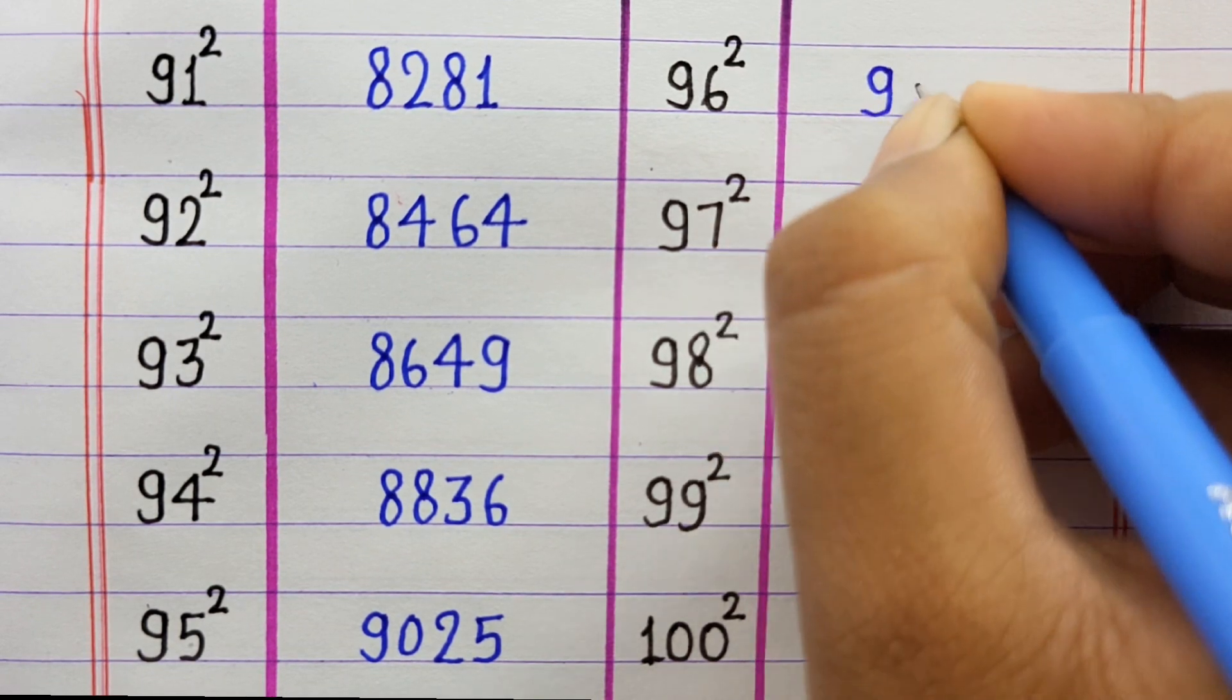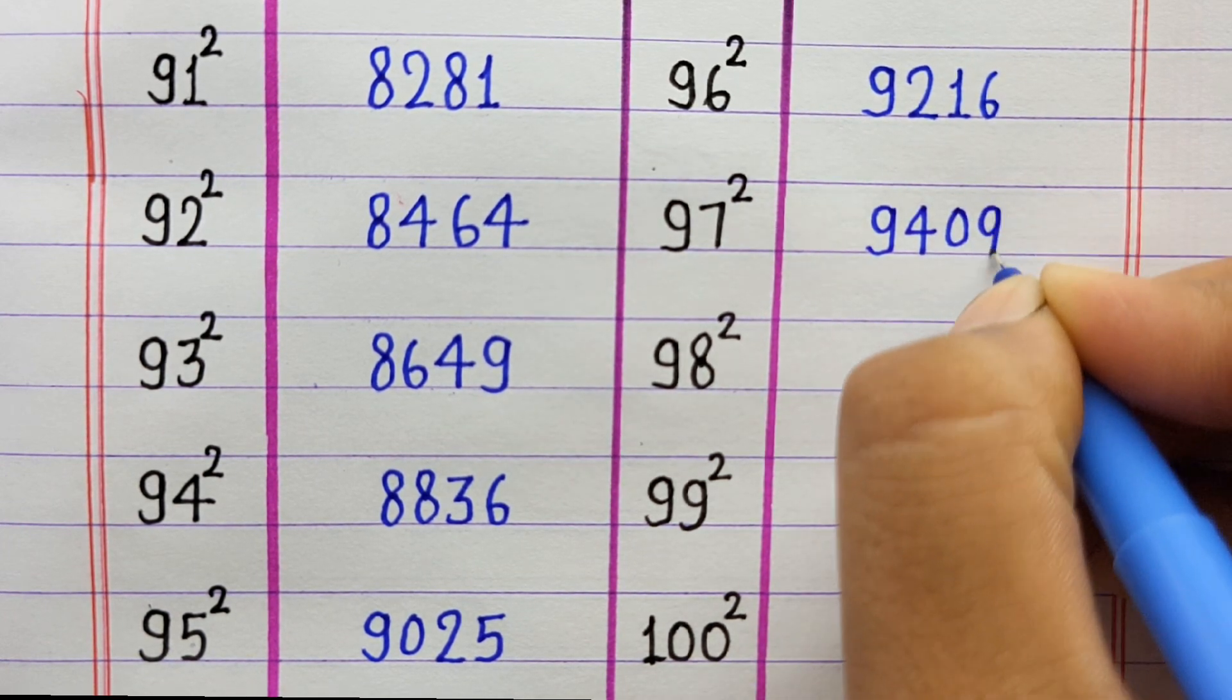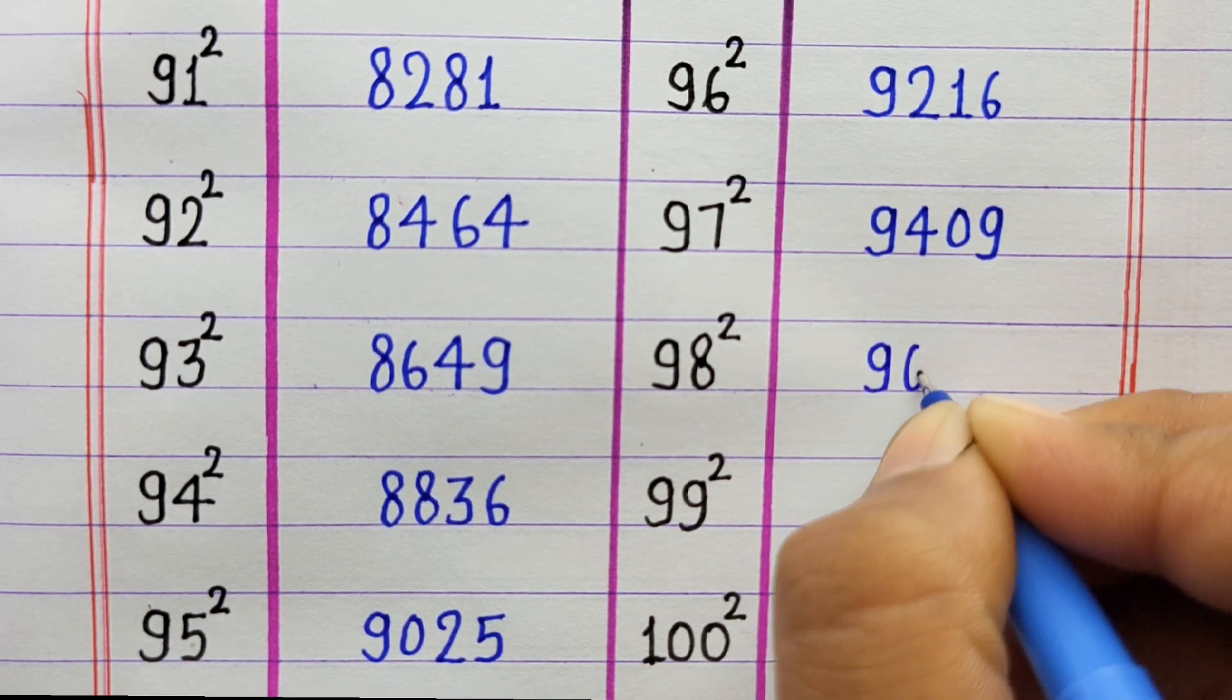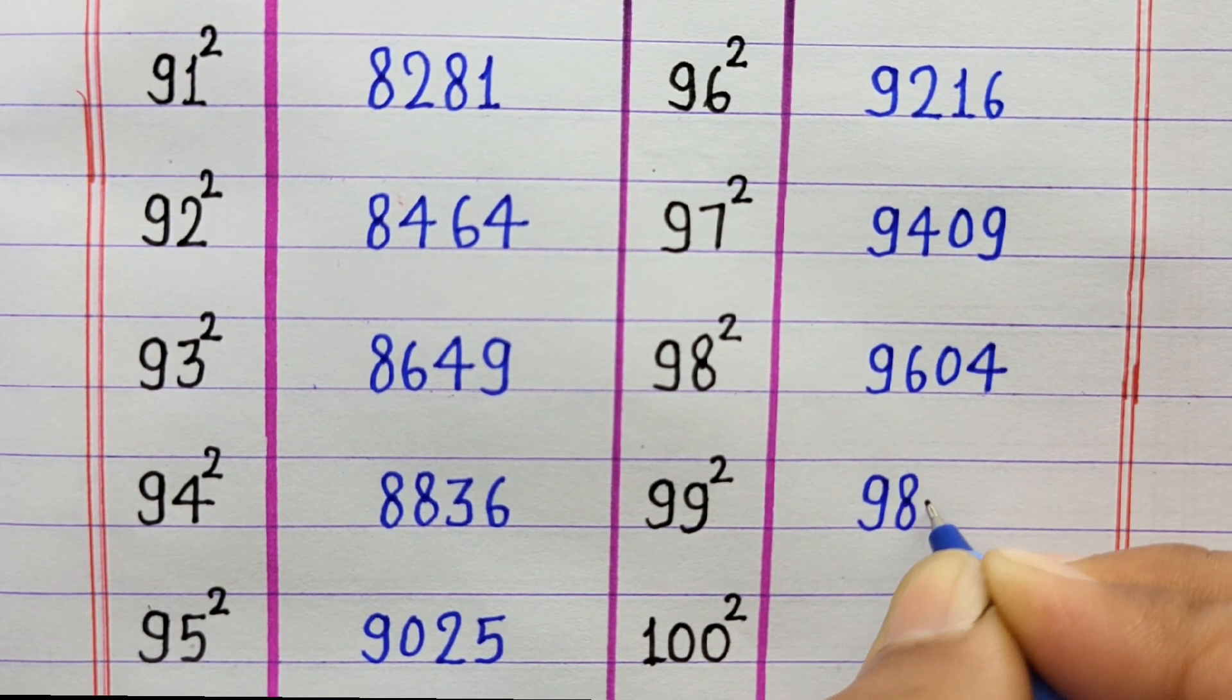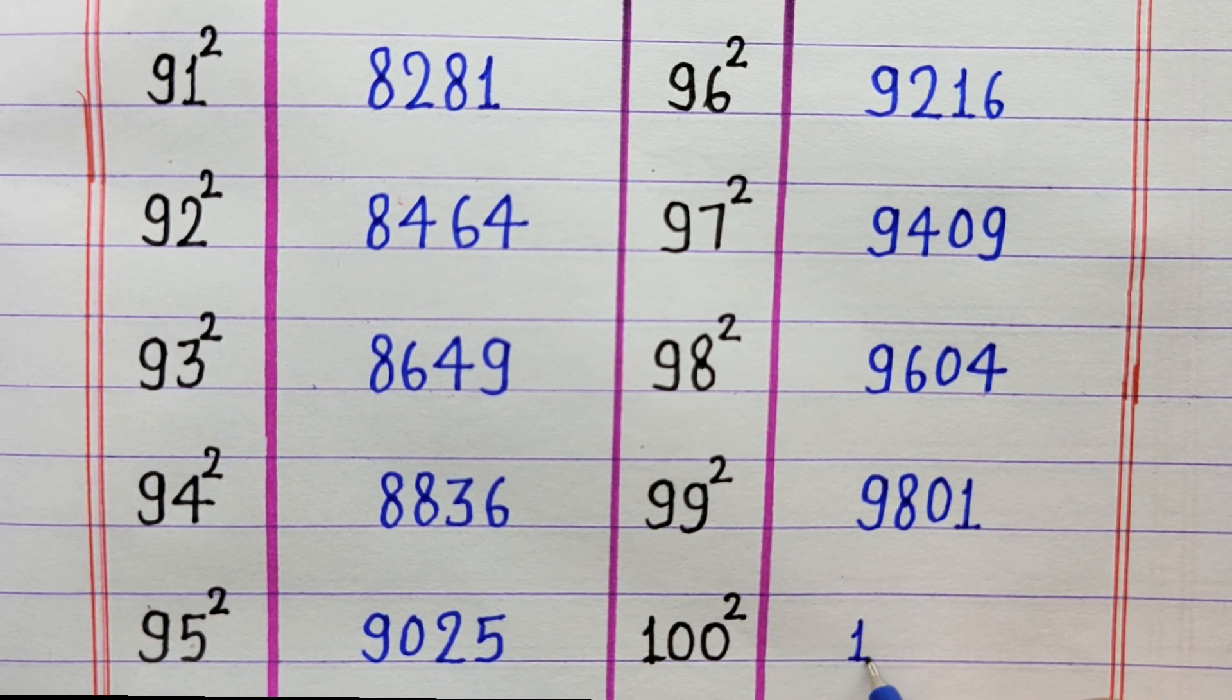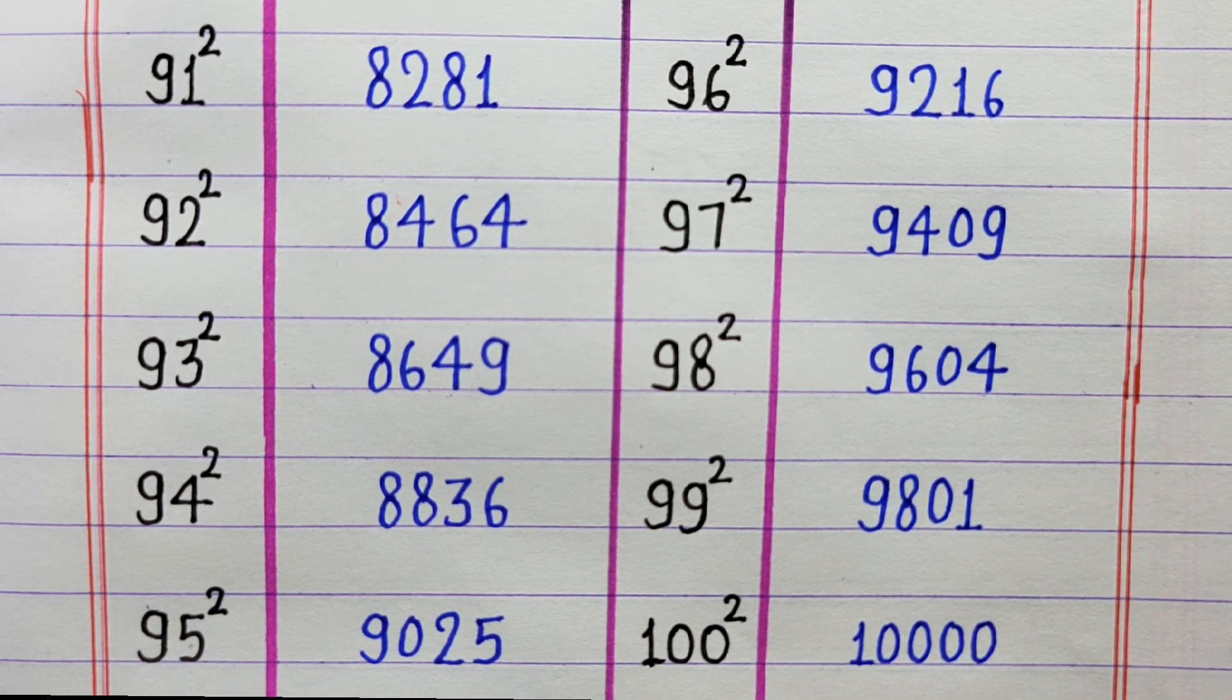96 ka square 9216, 97 ka square 9409, 98 ka square 9604, 99 ka square 9801, 100 ka square 10,000. Friends, like this video and please subscribe my channel. Thanks for watching this video, bye bye.